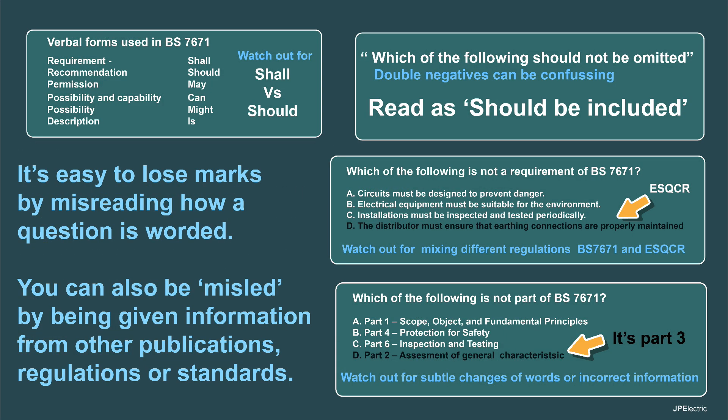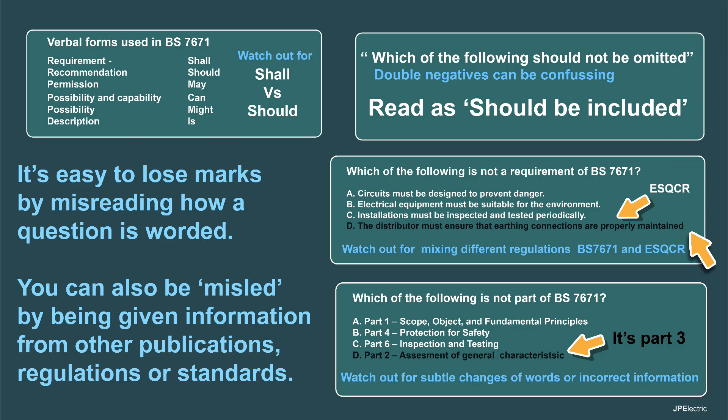It's easy to lose marks by misreading how the question is worded. You can be misled by being given information from other publications, regulations and standards. BS 7671 tells you the type of wording it uses in the introduction: if something's a requirement, it shall; if it's a recommendation, it should. And they can use that in the questions. When you're in a rush, the wording can be a bit confusing. Double negatives — which of the following should not be omitted? You've got to read that as should be included. Which of the following is not a requirement of BS 7671? All four things are true, but D is not part of BS 7671 — it's GSQCR.